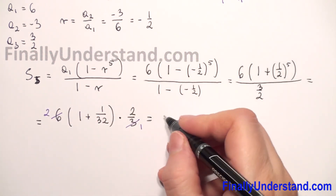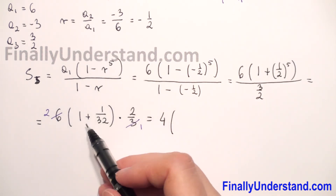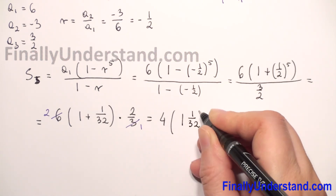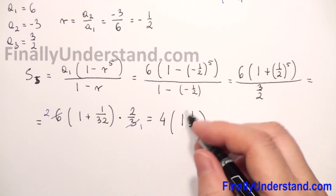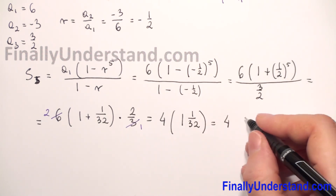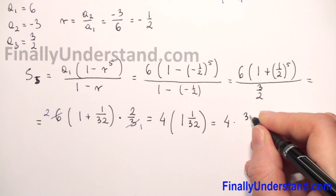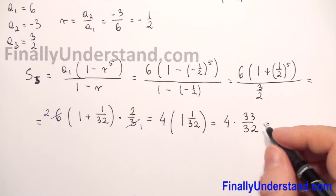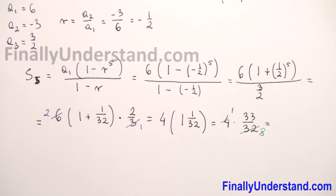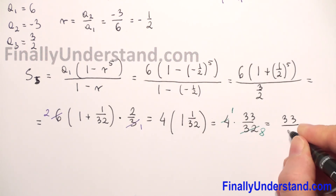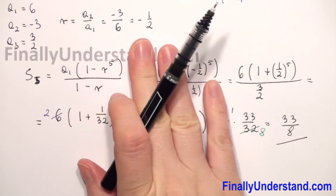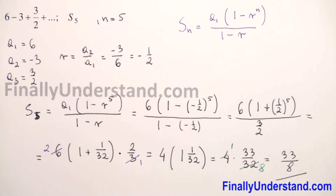We can reduce: 6 and 3 cancel to give 2 and 1, and 2 times 2 gives 4. In parentheses we have 1 plus 1 over 32, which is the mixed number 1 and 1 over 32. Converting to an improper fraction: 32 times 1 plus 1 equals 33, so we have 4 times 33 over 32. Reducing 4 and 32 gives 8 and 1, so the final answer is 33 over 8.